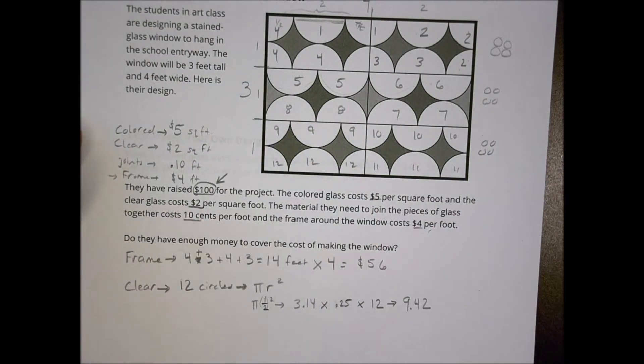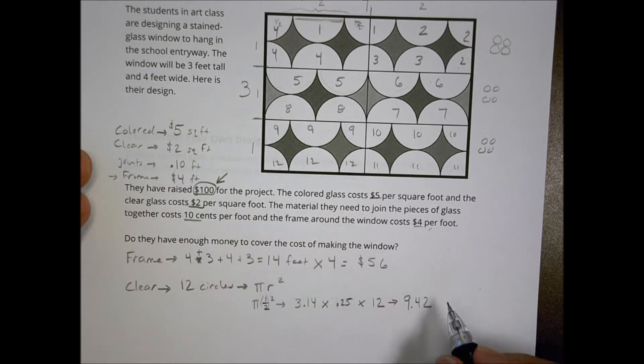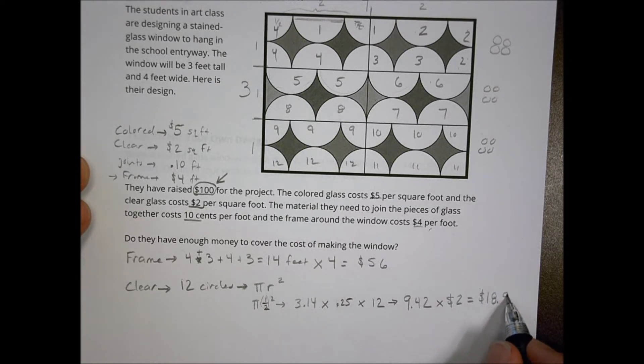Now the colored glass, sorry, the clear glass is going to cost me $2 a square foot. So we'll multiply that by $2 to get my cost. And so my cost for the clear is going to be $18.84. Okay. So we have the frame and we have the clear.